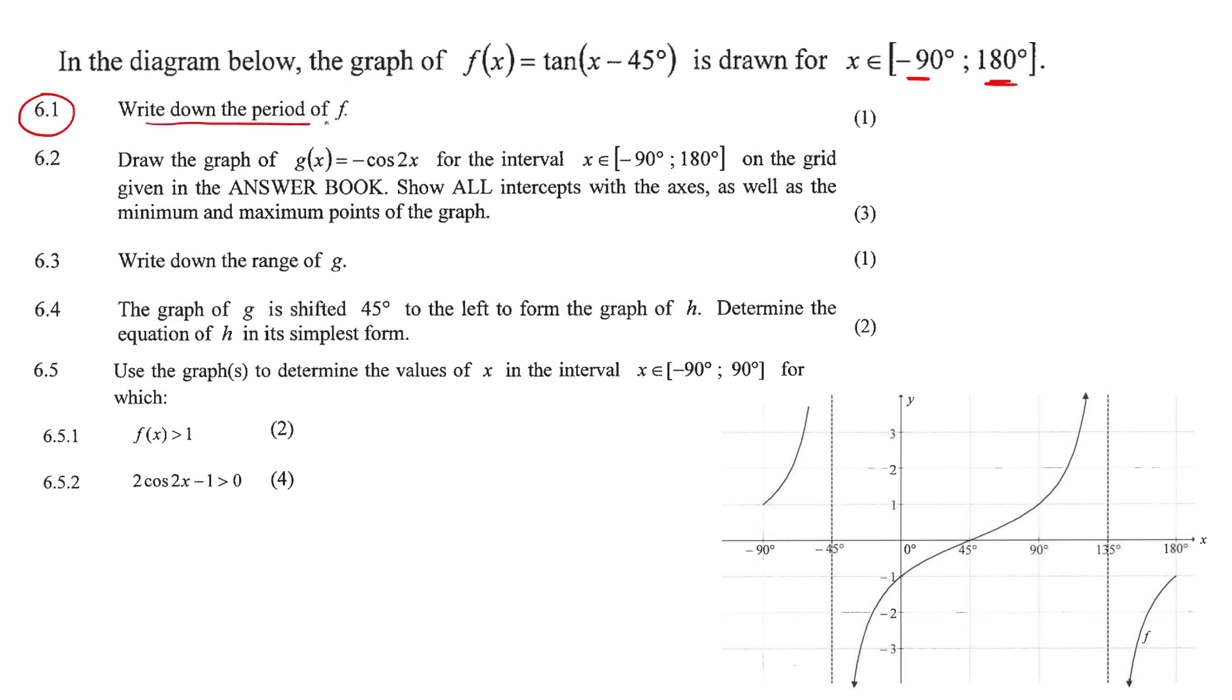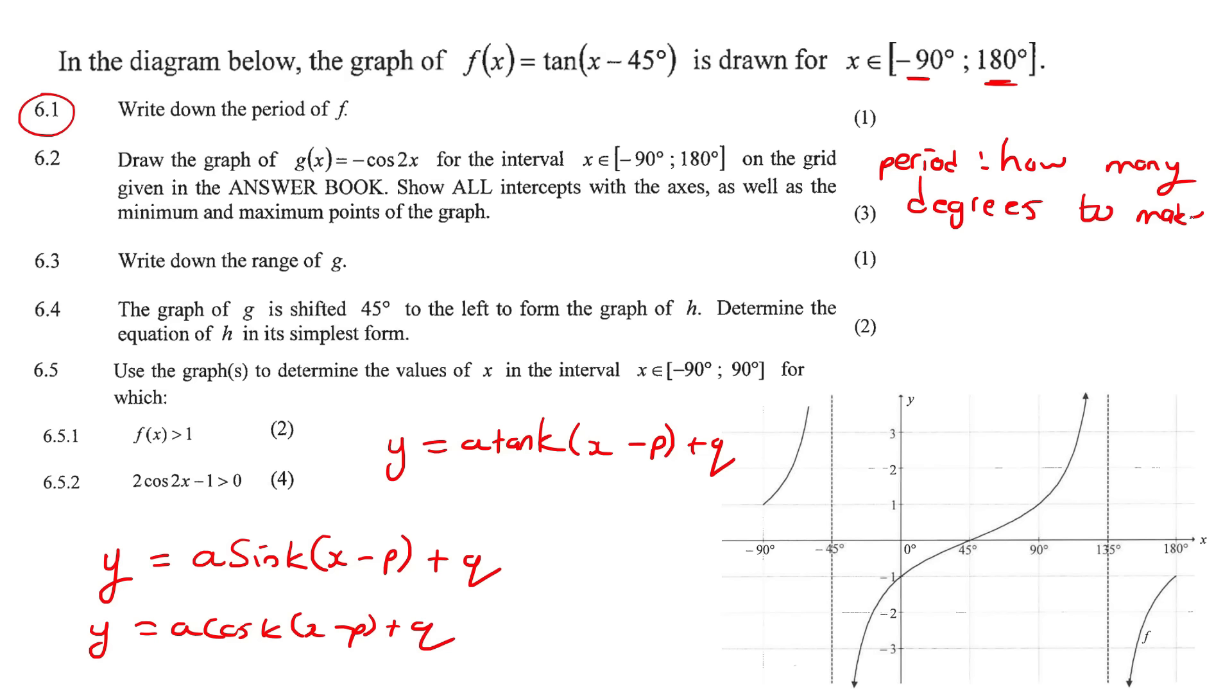First question, write down the period. Now remember, that period in a normal sin graph or tan or cos, we've got four parameters. Sin k bracket x minus p plus q. If it was a cos graph, exactly the same thing. And if it was a tan graph, exactly the same thing. k x minus p plus q. Now, I've made videos that detail what a, k, p, and q actually do to a graph.